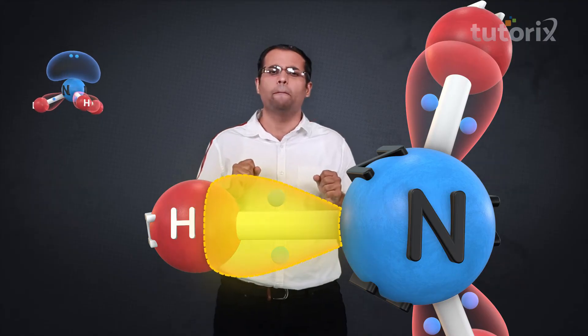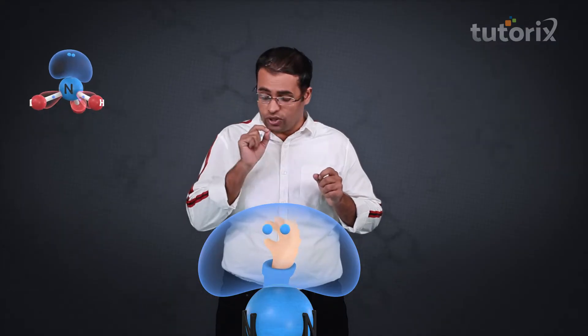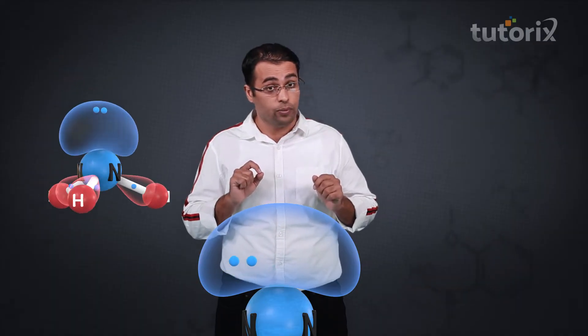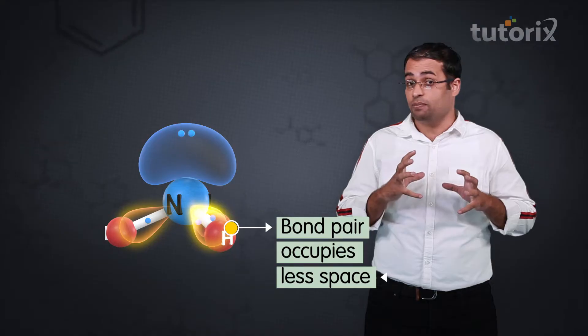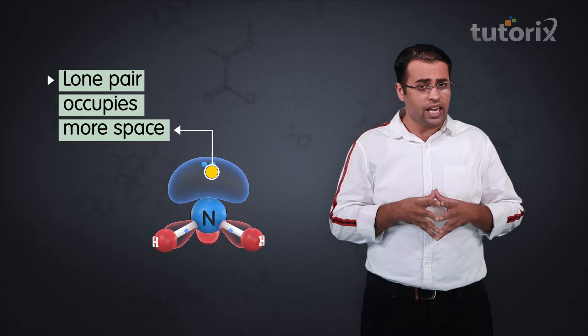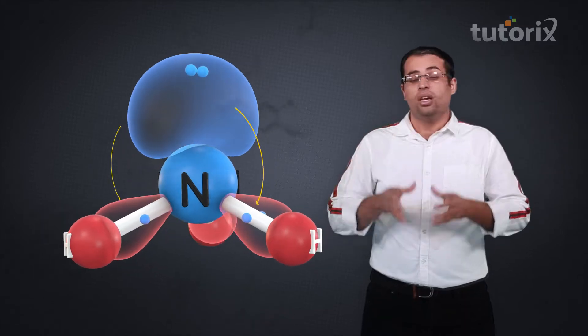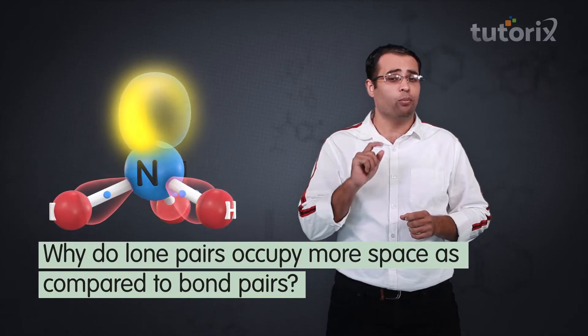So you can see how small this area is. Now consider the lone pair in ammonia — it is bound by only one atom, nitrogen, and is pulled by only the positively charged nucleus of nitrogen. So it has a larger area to move around, and because of this, the lone pair occupies a large space around the central atom nitrogen. We can make two conclusions: a bond pair occupies less space whereas a lone pair occupies more space. And precisely because the lone pair occupies more space and its electron cloud is large, it comes more in contact with other electron pairs and repels them more.